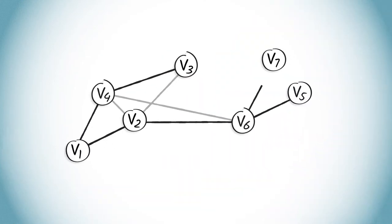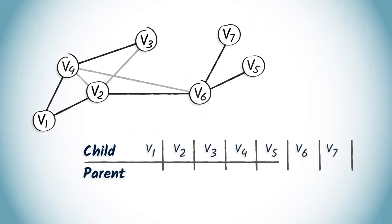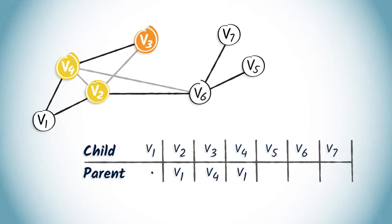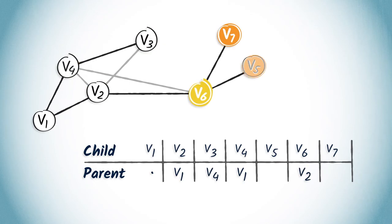As a second example, let's also build the routing table from the spanning tree obtained from a BFS. Here's the spanning tree. Again, we start from an empty table. V1 has two children vertices, V4 and V2. So, we add V1 in the corresponding columns. The only child of V4 is V3 and the only child of V2 is V6. Then, V6 has two children, V7 and V5. The routing table is complete.